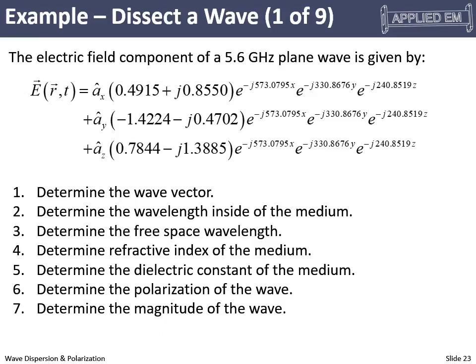Here's a comprehensive example. We have a 5.6 GHz plane wave with a complicated expression containing different numbers in the X, Y, and Z directions. We want to find seven things: the wave vector, the wavelength inside the medium, the free space wavelength, the refractive index, the dielectric constant, the polarization, and the magnitude of the wave. This is probably the hardest possible example, but if you can do this, you can do all the others — it's the most generic case.